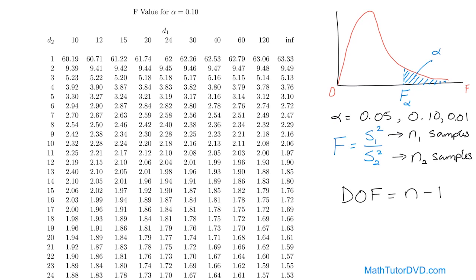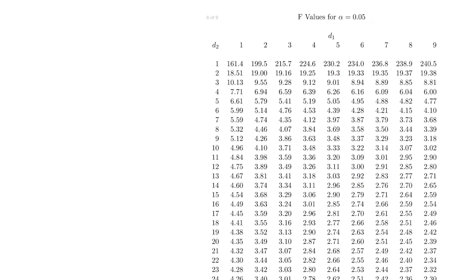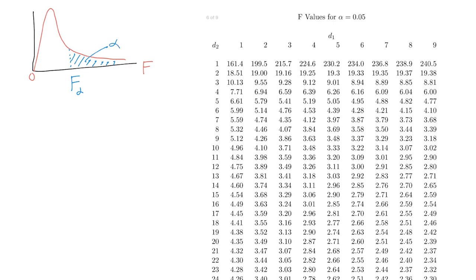Now we'll do a couple of quick exercises to practice reading correct values off the chart. Keep in mind the shape of the F distribution — skewed right, starting at zero. What you're always looking for is the critical value F sub alpha that has a shaded region to the right equal to alpha. All of these tables return the value of F that gives you that right-hand shaded region.